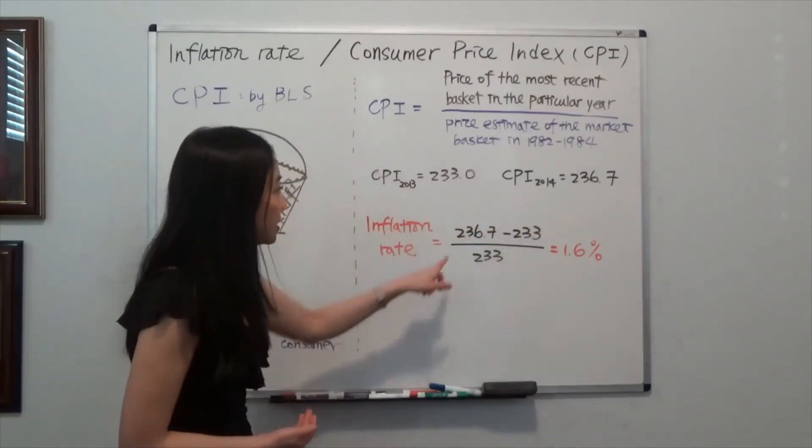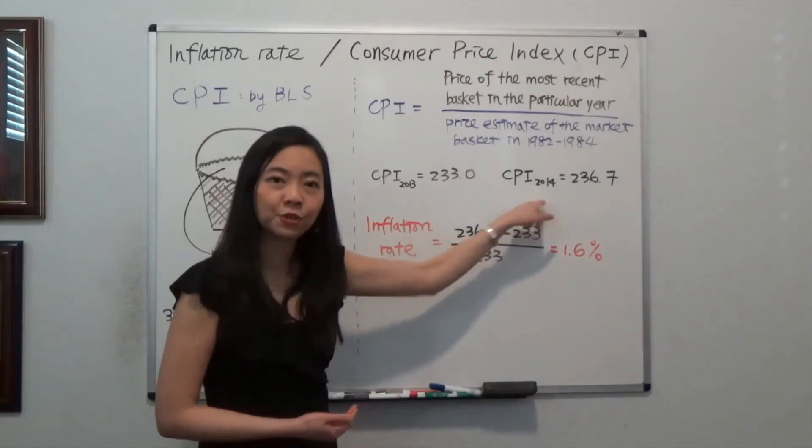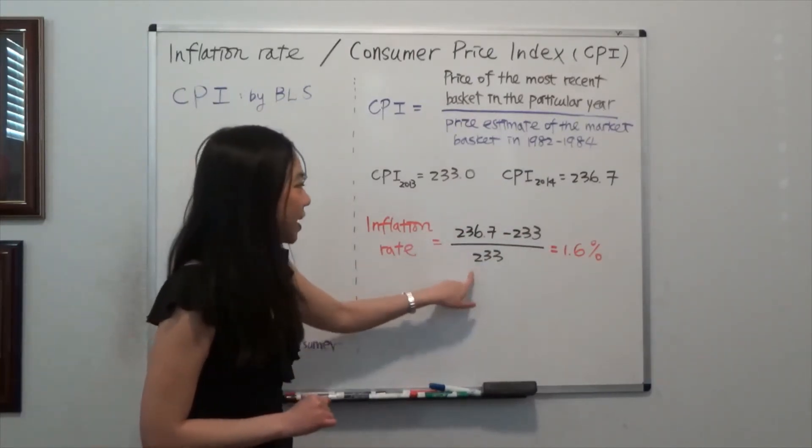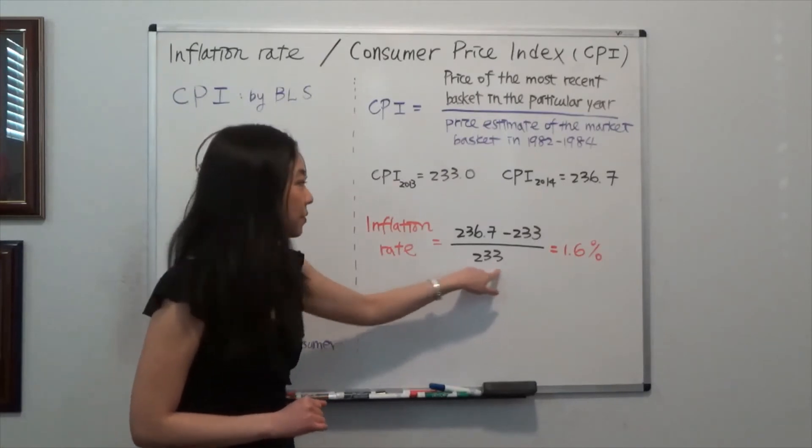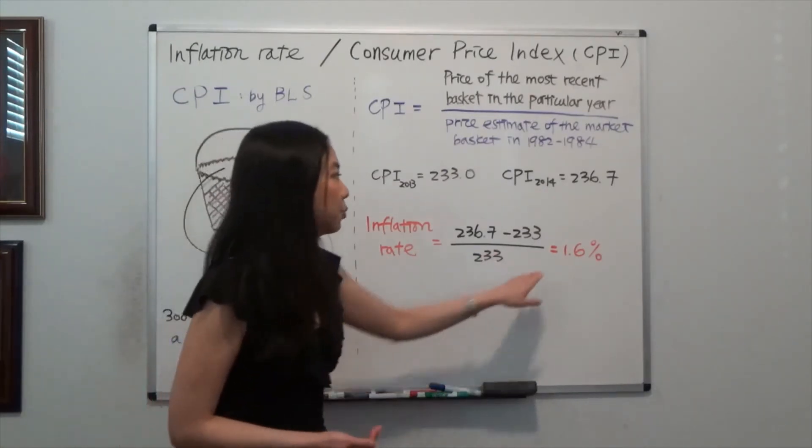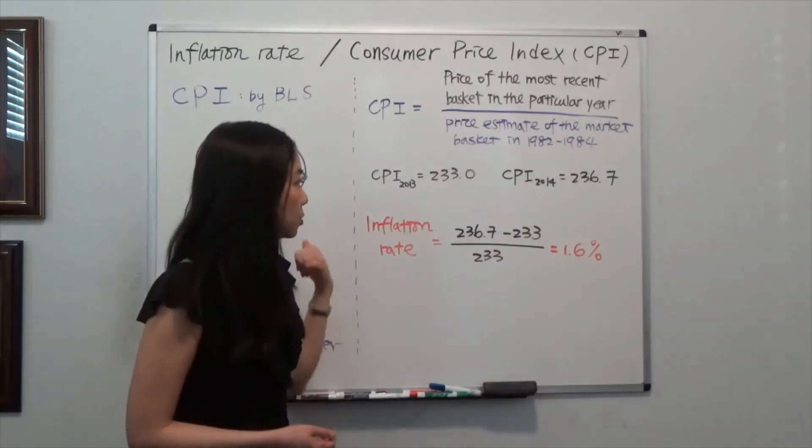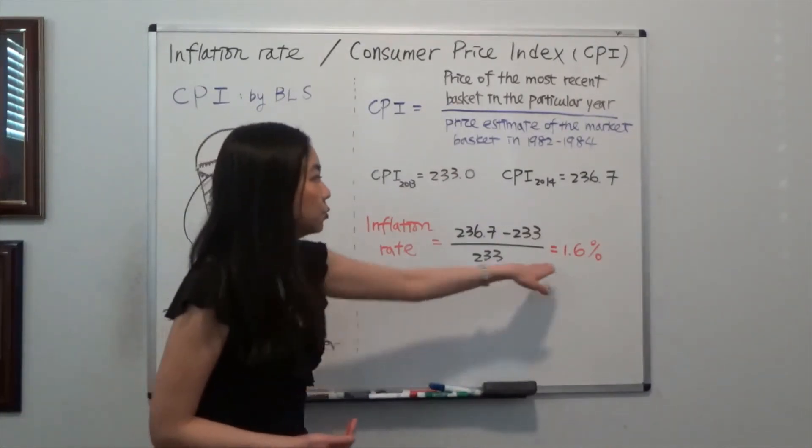And that will be the CPI of year 2014 minus the CPI in year 2013 divided by the CPI in year 2013. And that is equal to 1.6%. So we know the inflation rate between 2013 and 2014 is equal to 1.6%.